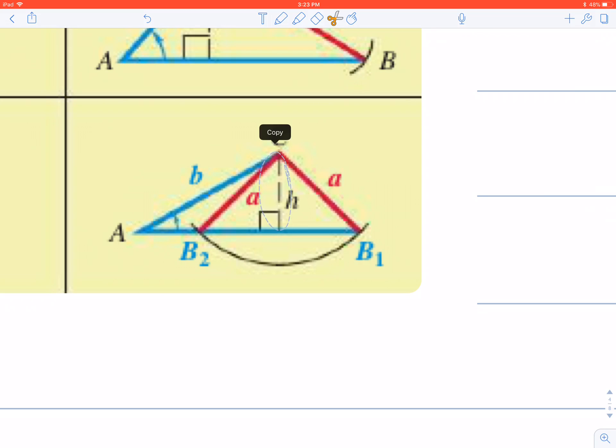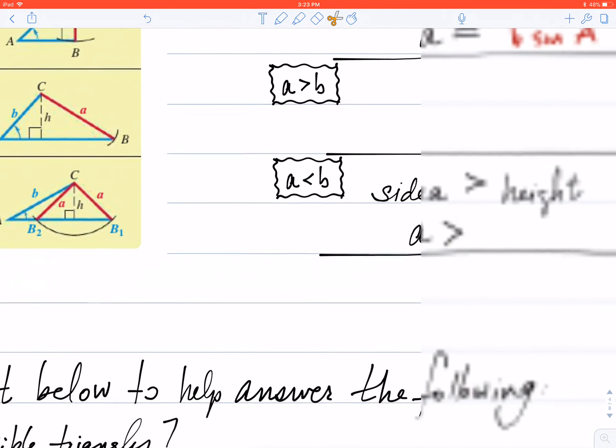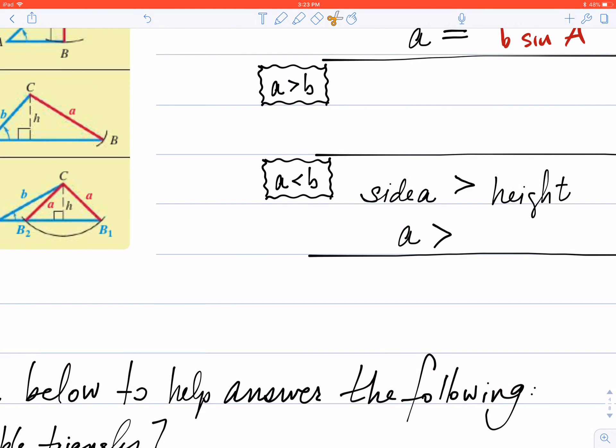Side a is longer than the height of this triangle. And in fact, I can swing it back and forth. And not only can I have a side a here, I can also have a side a over here. And either way, it still forms a triangle. So I have two separate triangles on this one. So over here, we've got side a is longer or greater than the height of my triangle. Again, for height, let's sub in b times the sine of angle A.